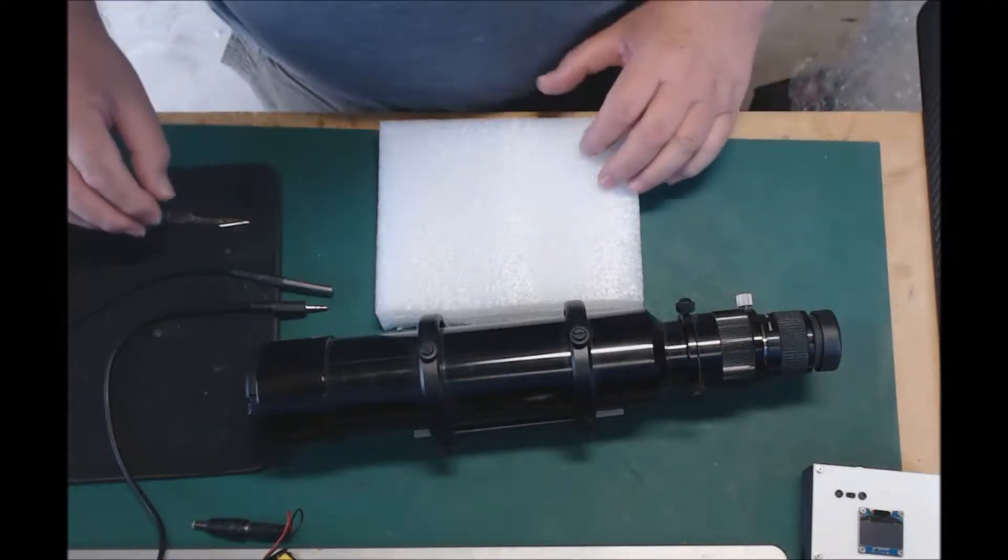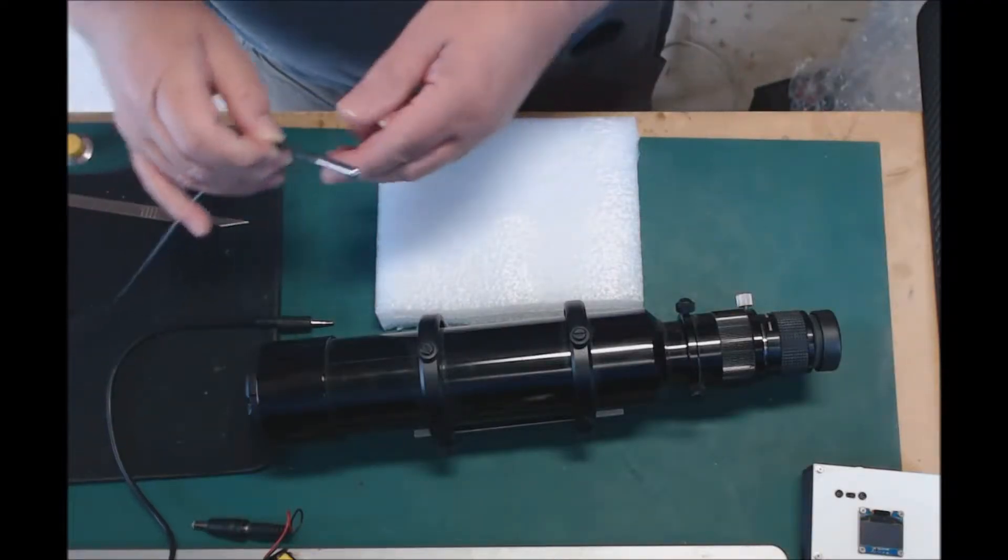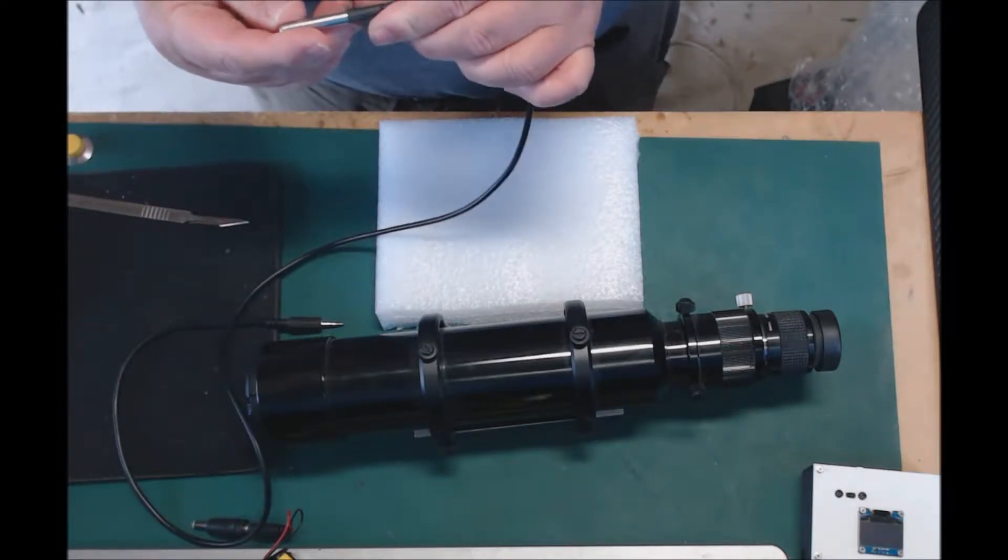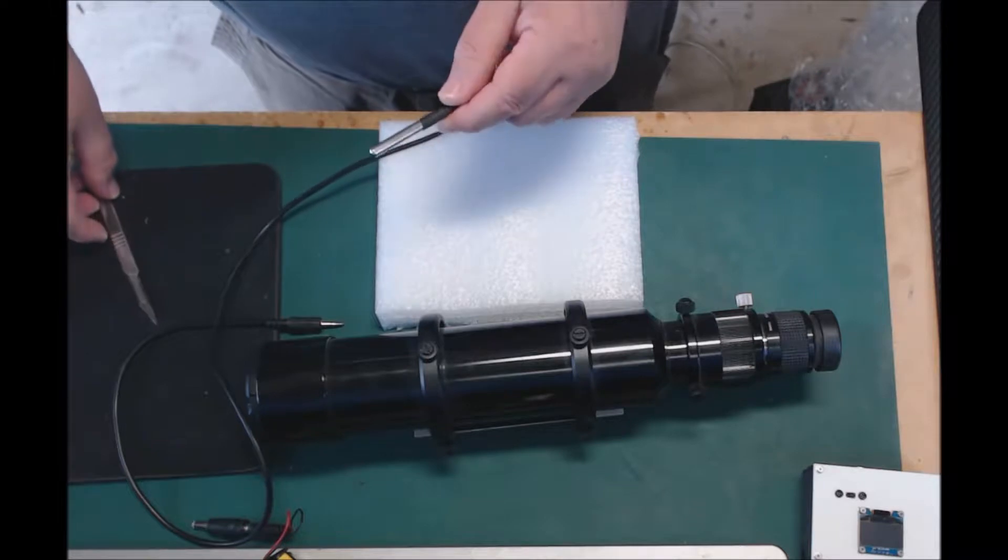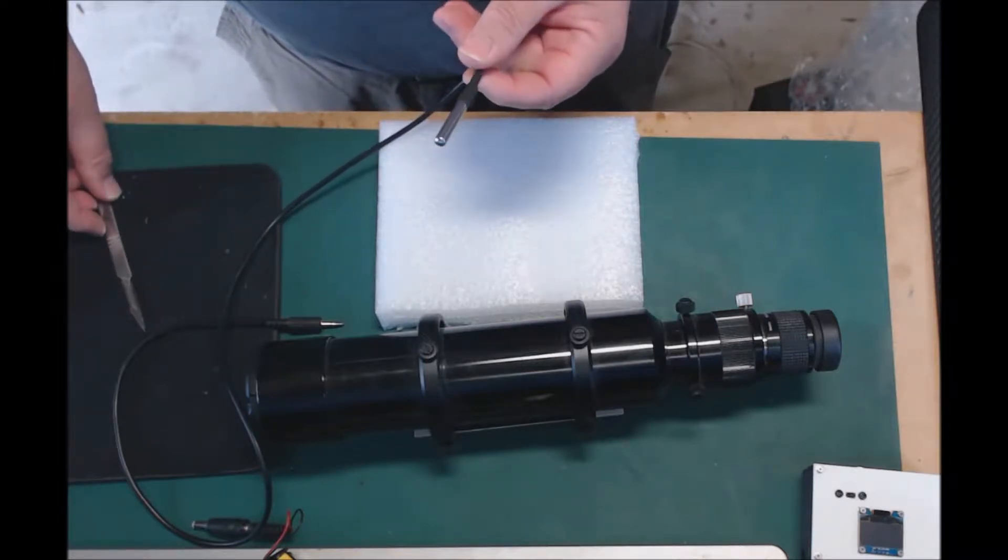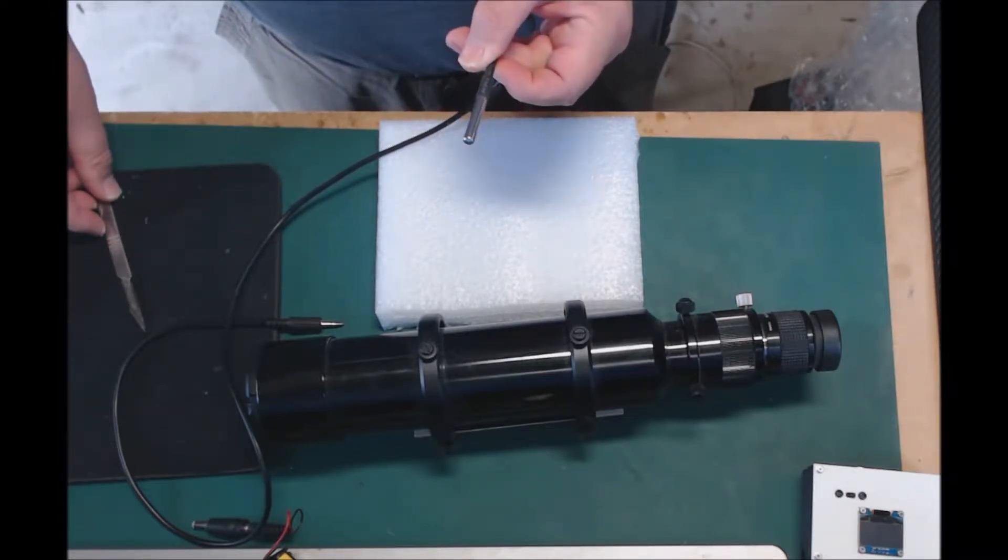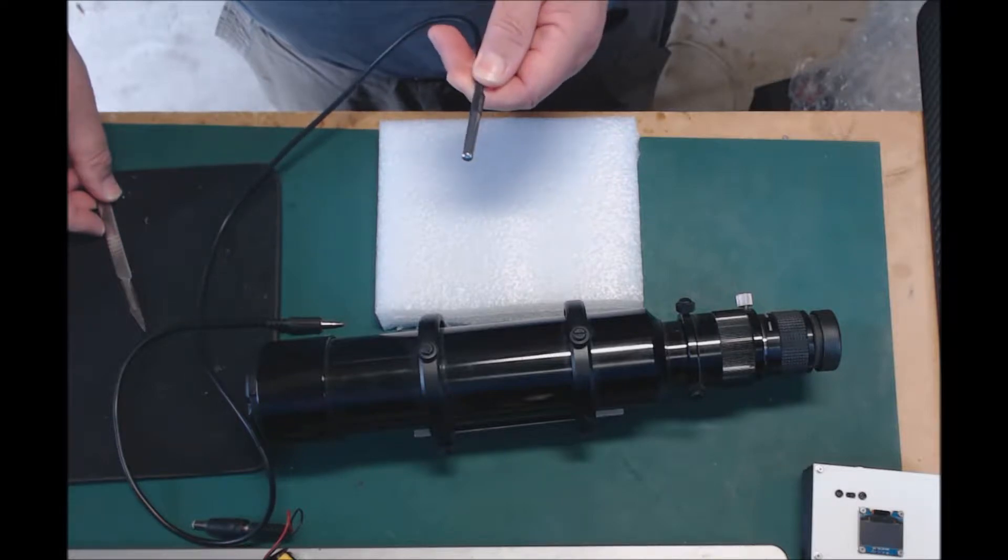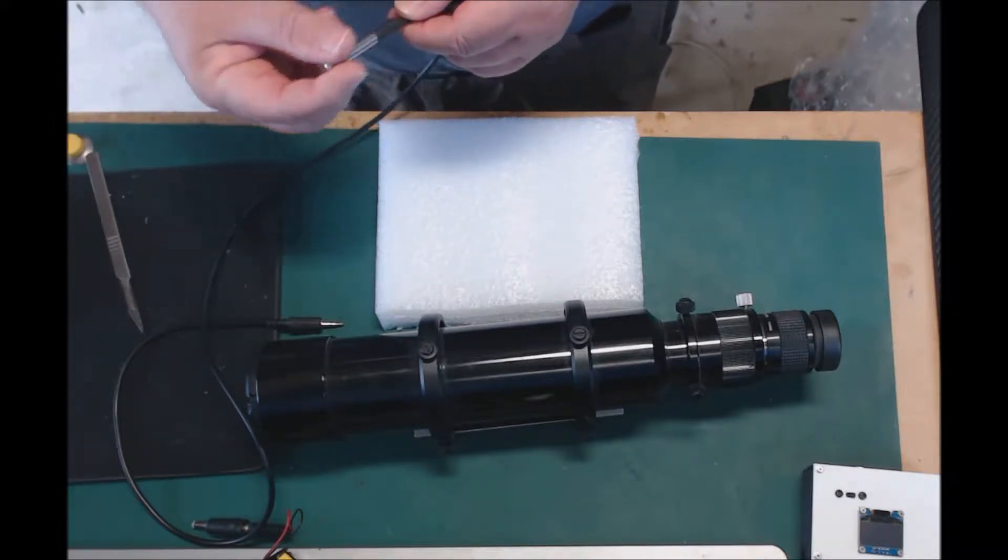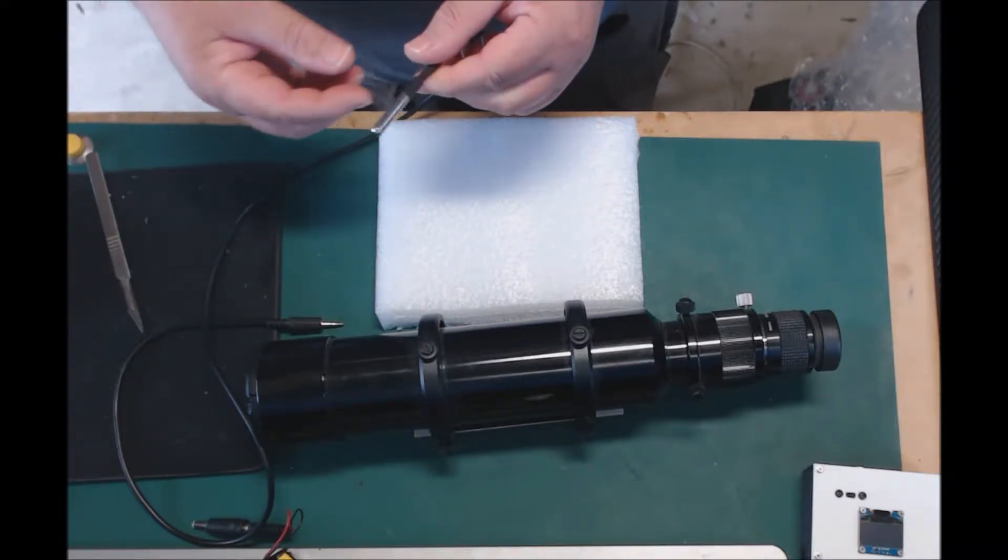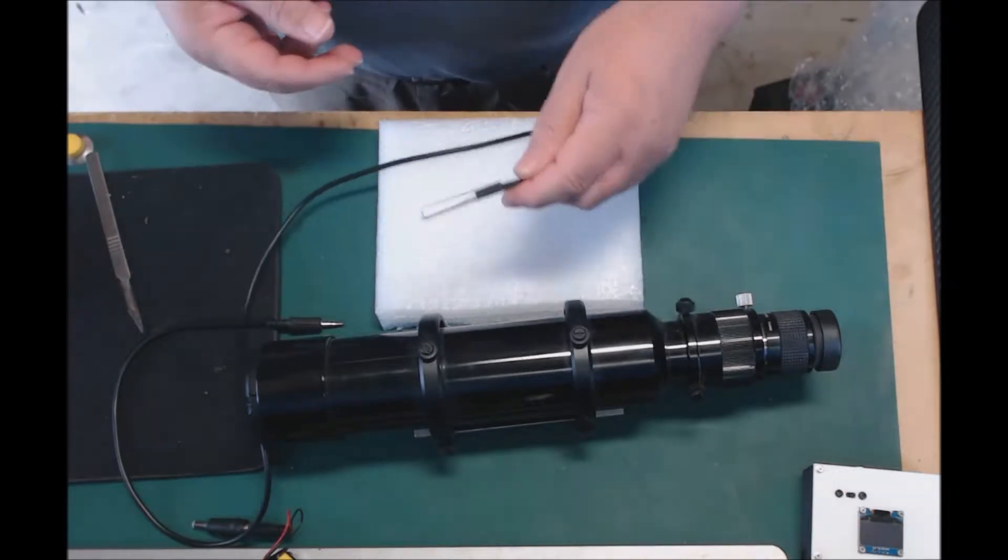I wanted to talk about temperature compensation and my focuser. The focuser supports a temperature probe, and the first thing we need to do is decide where we're going to locate this. The temperature probe for the focuser is really not about the optics, it's about the tube, so somehow we're going to have to mount it on the tube.